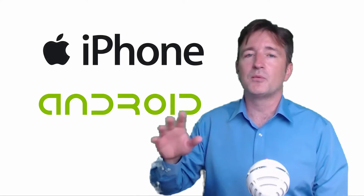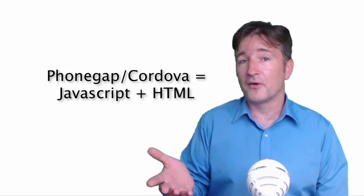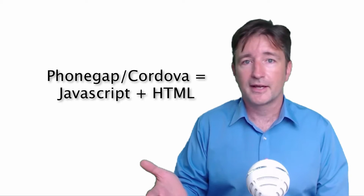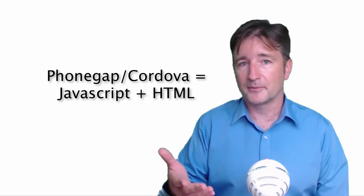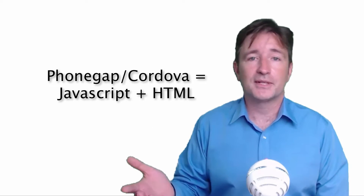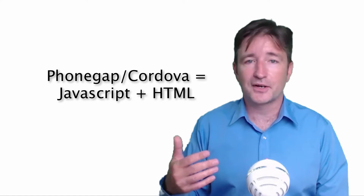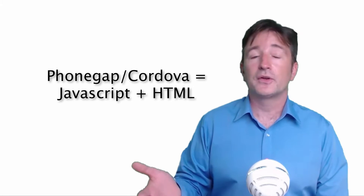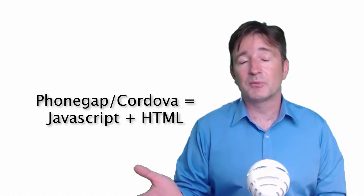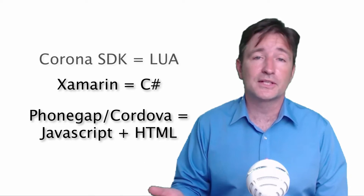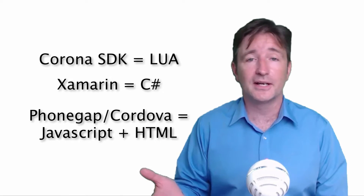This framework could be in many languages. PhoneGap, or Cordova as it's also called, is done in JavaScript and HTML — it's very easy to use and very powerful. However, you also have things like Xamarin, which is done in C#. You have Corona SDK, which we use, done in Lua. There are loads of them.